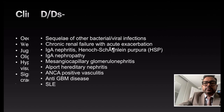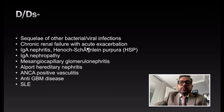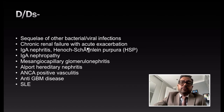Differentials include other bacterial or viral infections, chronic renal failure with exacerbation, IgA nephropathy, Henoch-Schönlein Purpura (HSP), IgA nephropathy, mesangioproliferative glomerulonephritis, Alport syndrome (hereditary nephritis), ANCA-positive vasculitis, anti-GBM disease, and SLE.